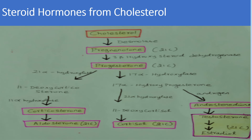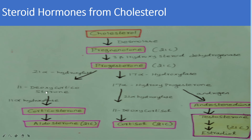Once pregnenolone is formed from cholesterol, other steroid hormones are synthesized. From pregnenolone, we get progesterone in the presence of the enzyme 3-beta-hydroxysteroid dehydrogenase. From progesterone, hydroxylation occurs to form corticosterone: in the presence of 21-alpha-hydroxylase, progesterone is hydroxylated at C21 to yield 11-deoxycorticosterone, which is further hydroxylated at C11 by 11-alpha-hydroxylase to form corticosterone.